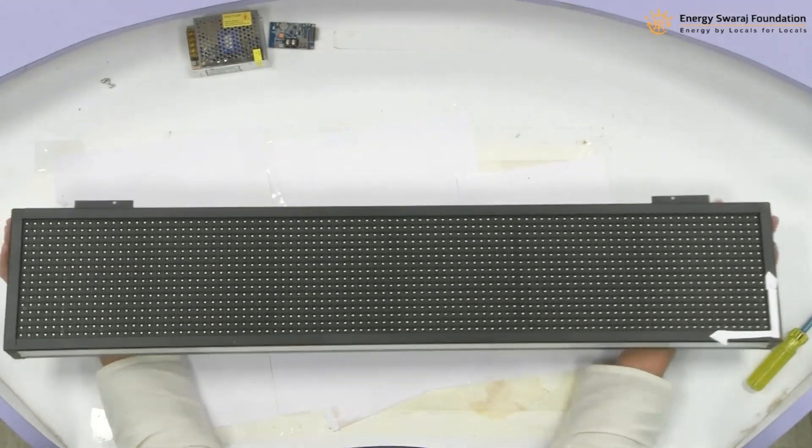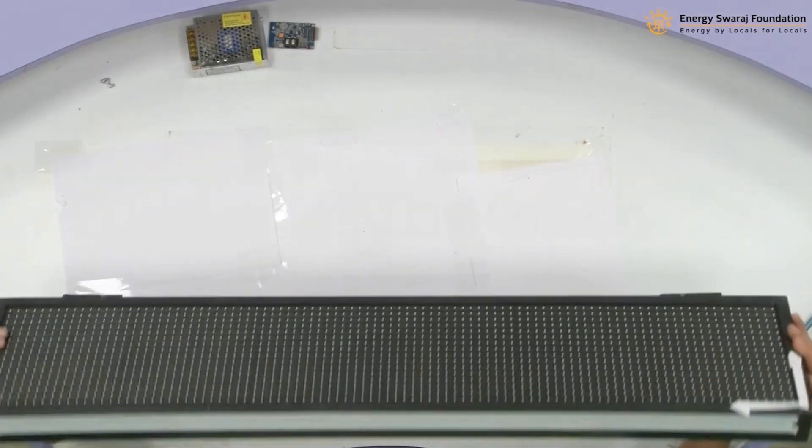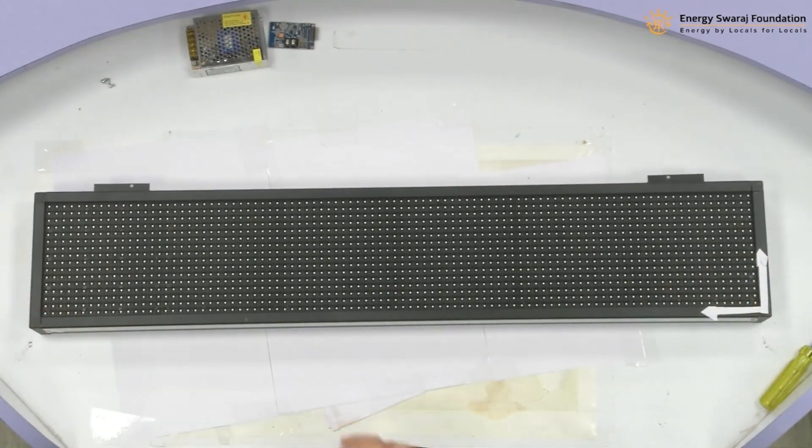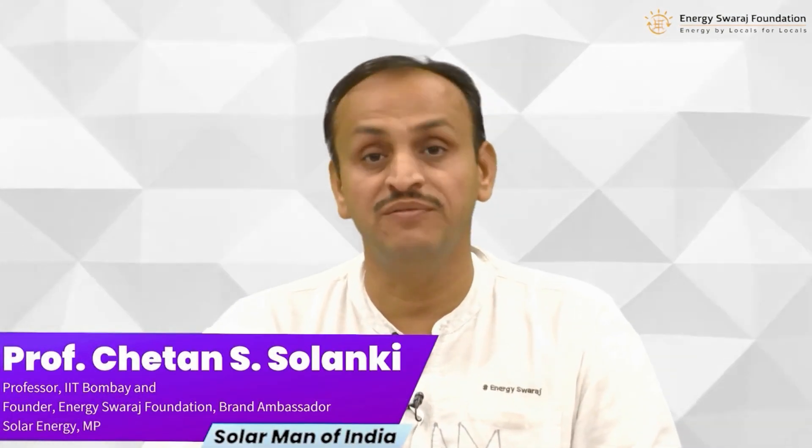All right, so that is the first step of making your own climate clock. We have now connected three P10 LED displays with the frame.